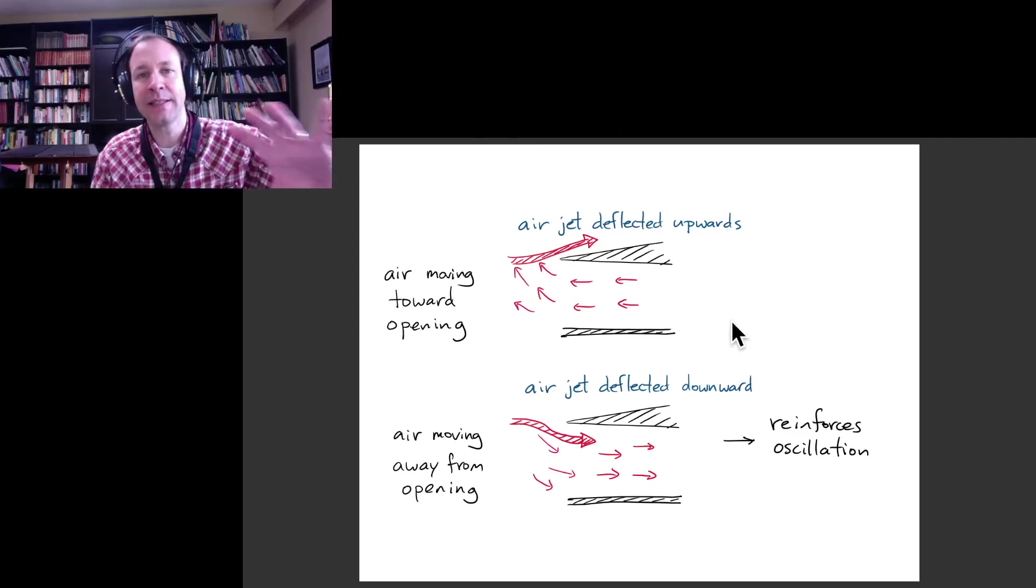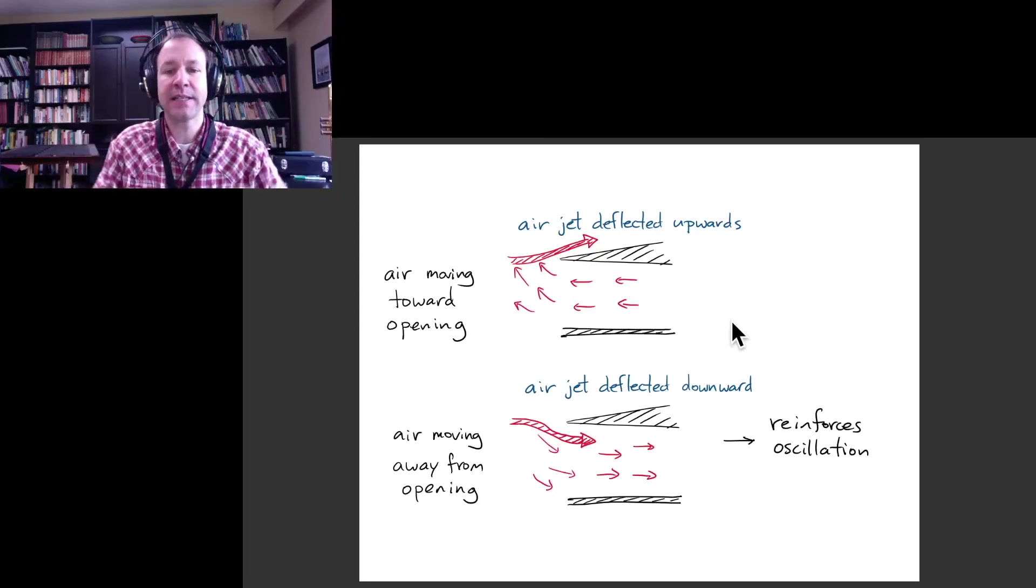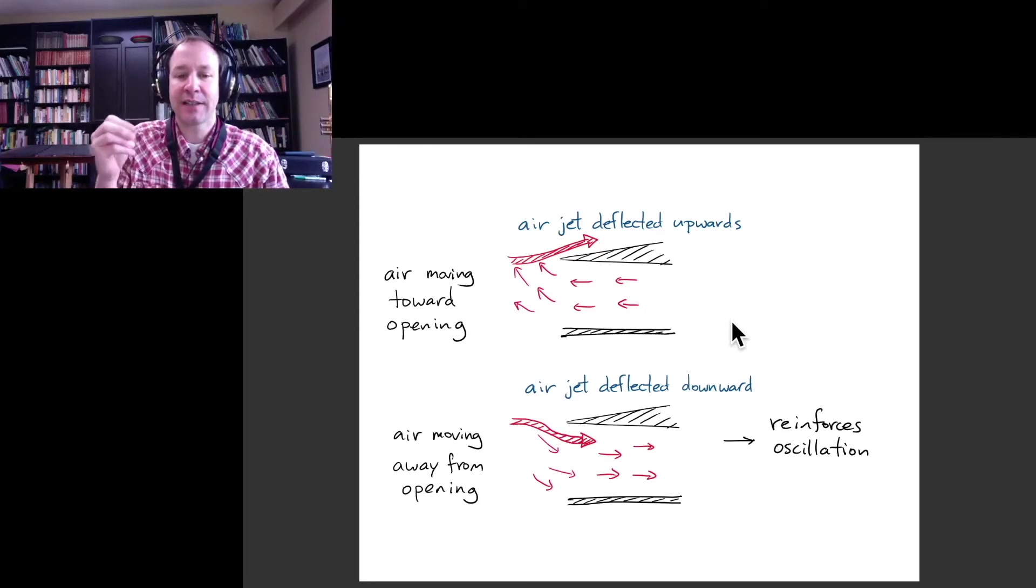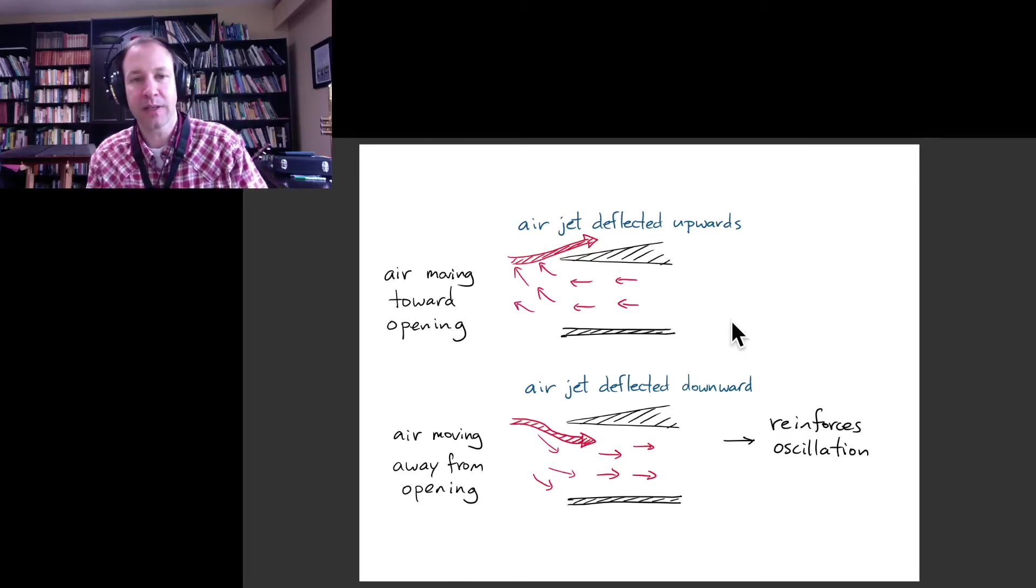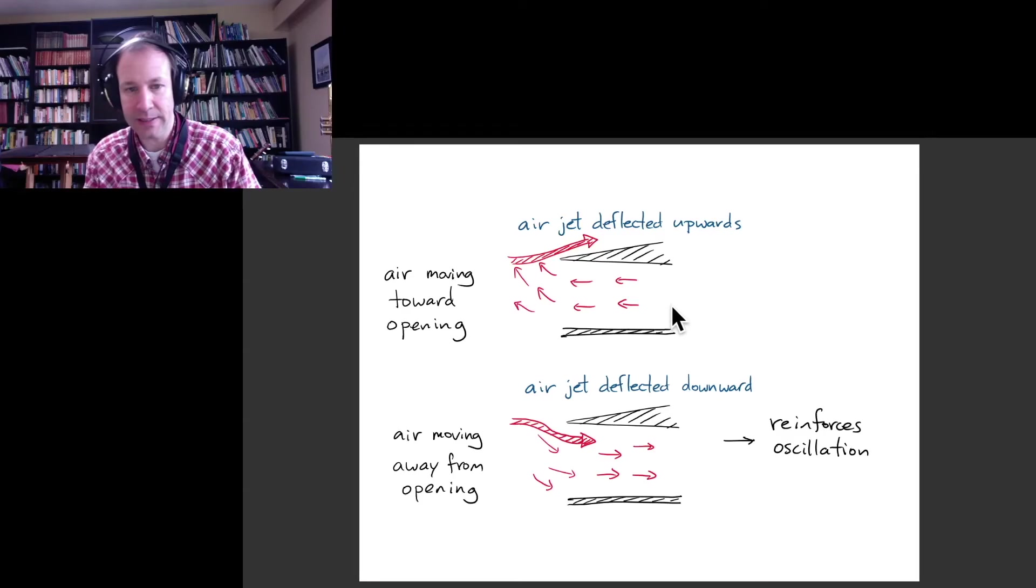So just like the situation with the reed, then we have the oscillation of the air inside the tube being reinforced by the air jet. Even though that's just a continuous air jet, it deflects upward and downward in response to the standing wave that's already there.